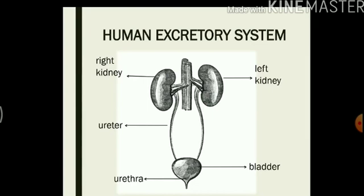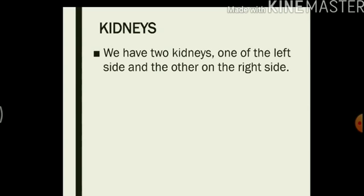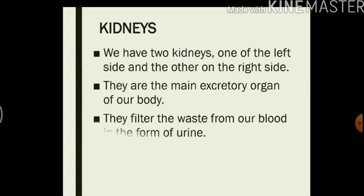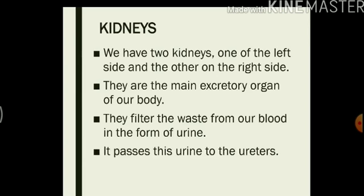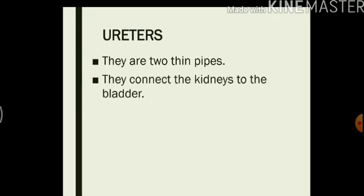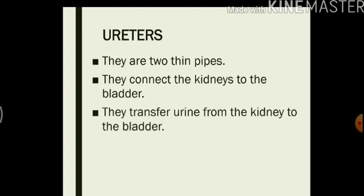These organs together form the excretory system. Let us see the functions of each organ. The kidneys — we have two kidneys in our body, one on the left side and the other on the right. They are the main excretory organs in our body. They filter the waste from our blood in the form of urine. This urine is passed to the ureters. The ureters are two thin pipes that connect the kidneys to the bladder. They transfer urine from the kidney to the urinary bladder.